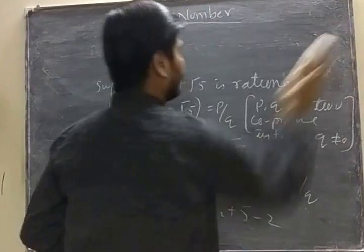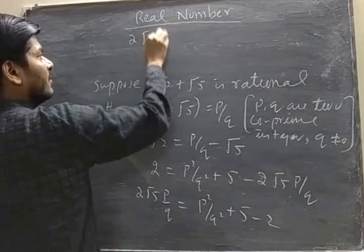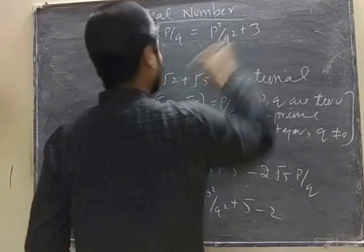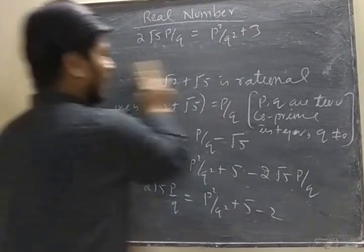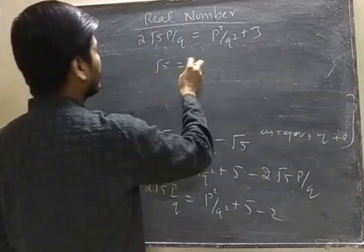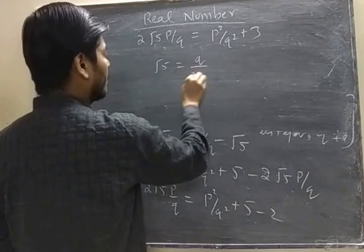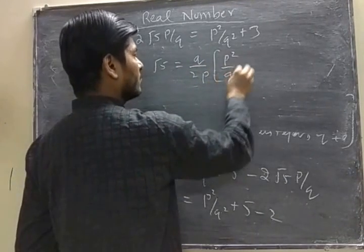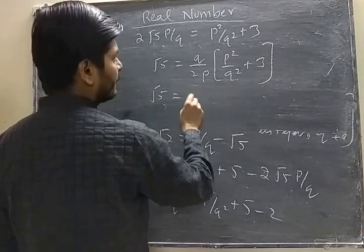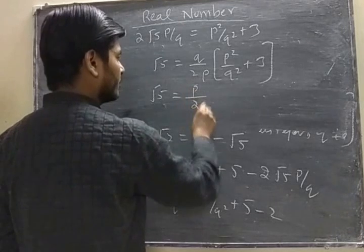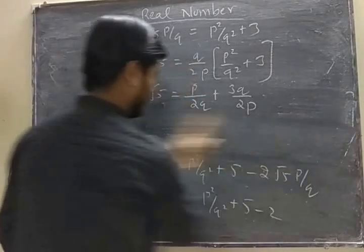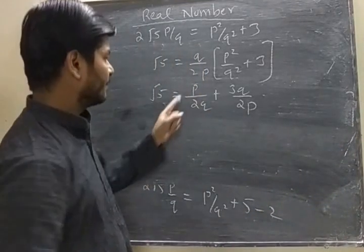Now, isolating root 5, we can say that 1 by 2 is rational, P by Q is rational, P by 2Q is rational, 3 by 2 is rational, Q by P is rational, 3Q upon 2P is rational. We can say that P upon 2Q plus 3Q upon 2P is rational, but it is equal to root 5 which is irrational. Hence our supposition is wrong.